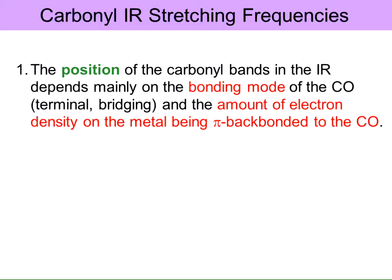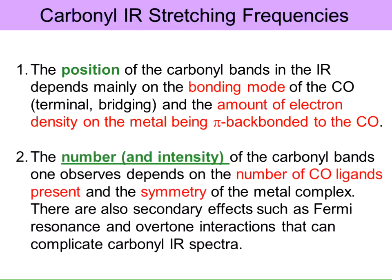The number of carbonyl bands and the intensity of those bands depends on the number of CO ligands present and the symmetry of the metal complex. There are also secondary effects such as Fermi resonance and overtone interactions that can complicate carbonyl IR spectra, but we'll mainly focus on using symmetry and group theory to determine the number of CO bands that we should see.